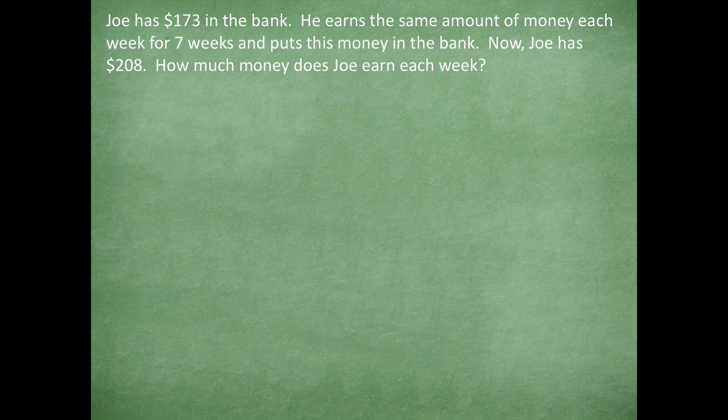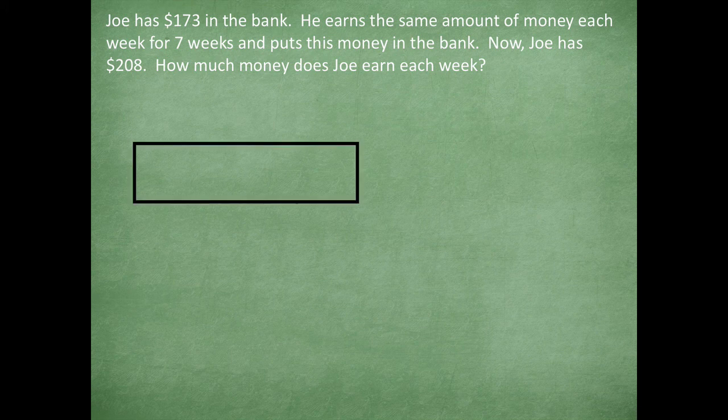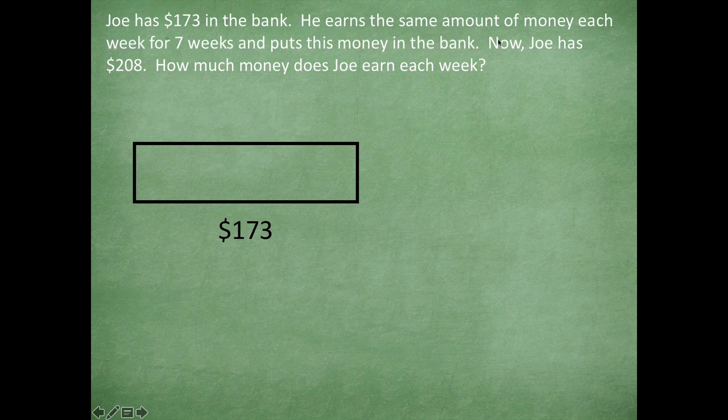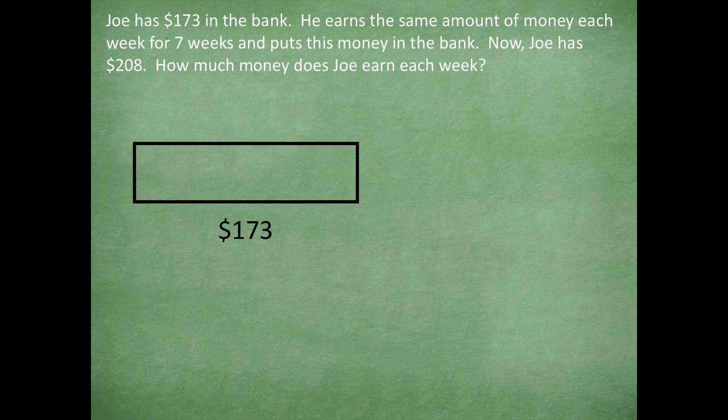Here's how I would set up my tape diagram. I kind of want to go one sentence at a time. He has $173 in the bank, so there's my first part of my tape diagram. Then I also know that he earns some money. It tells us he earns the same amount of money each week for seven weeks and puts this money in the bank.